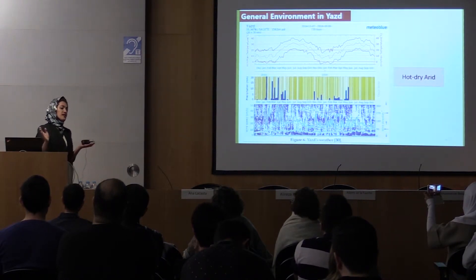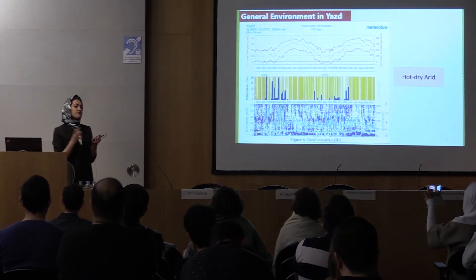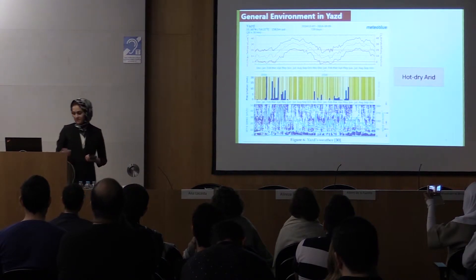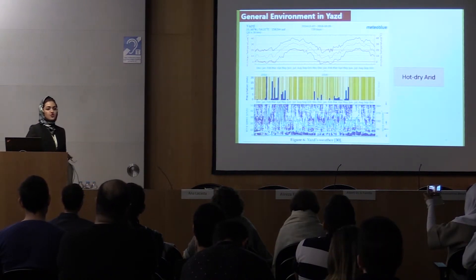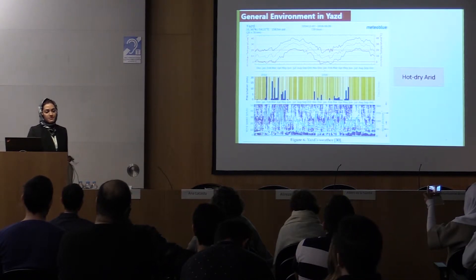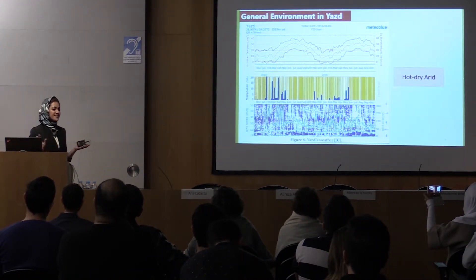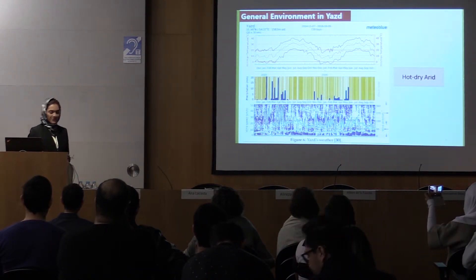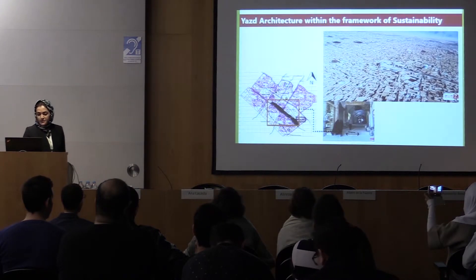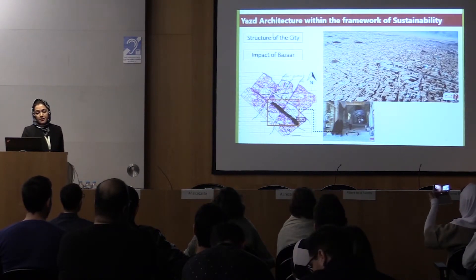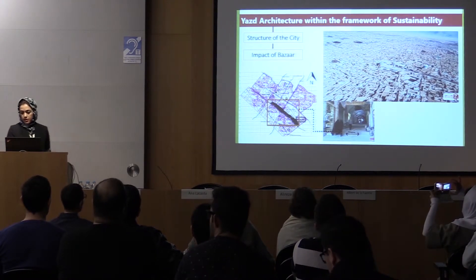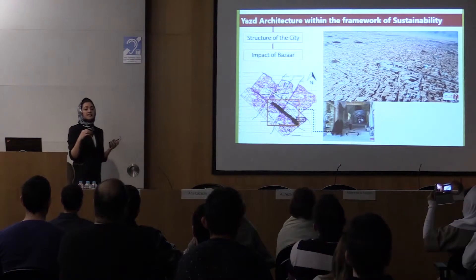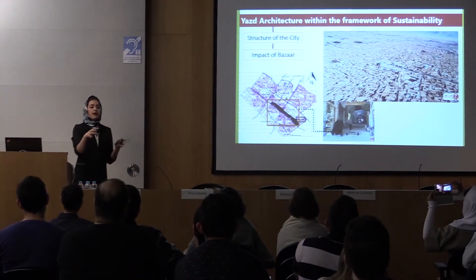In this macro harsh climate, they made some micro pleasant environments and climates. There are lots of solutions and techniques, but I have selected just some parts because it would take hours to cover everything. First of all, the structure of the city — the shape of the city — is linear and it has a round bazaar.